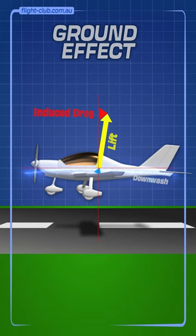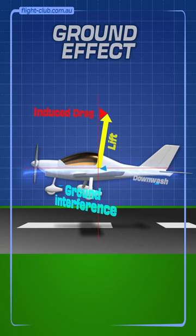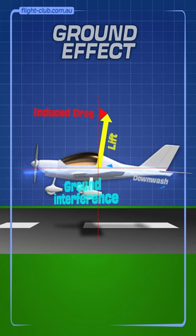When the aeroplane flies close to the ground, something interesting happens. The ground surface interferes with the airflow below the wings and reduces the amount of air that spills over the wingtips.